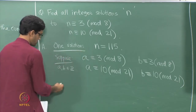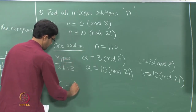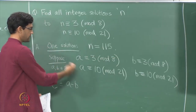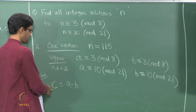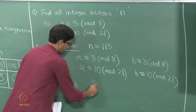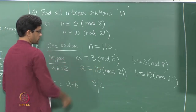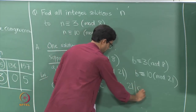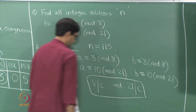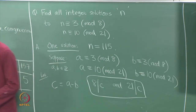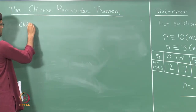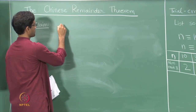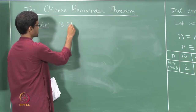So C satisfies two properties: it is divisible by 8 and by 21. We claim that the fact it is divisible by both 8 and 21 implies that C is in fact divisible by their product, 8 times 21, which is 168. Let us prove this claim using the prime factorization of C.